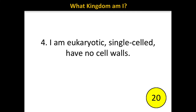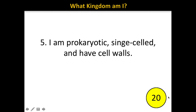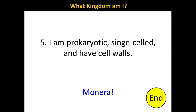Number four: I am eukaryotic, single-celled, and have no cell walls. The correct answer is Protista. Number five: I am prokaryotic, single-celled, and have cell walls. The correct answer is Monera.